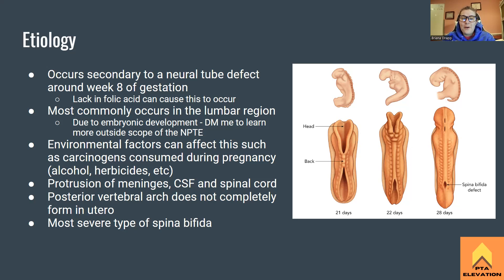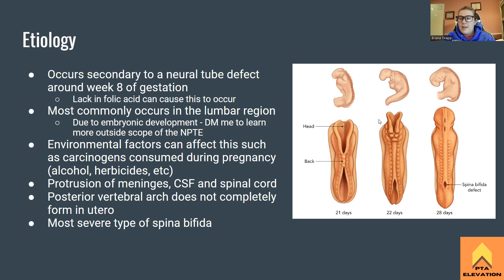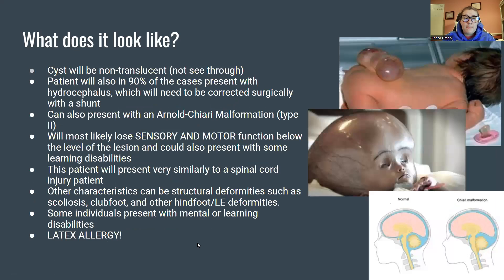So with myelomeningocele, there's protrusion of the meninges, CSF, and spinal cord. The posterior vertebral arch doesn't develop completely — it doesn't ossify — so the cyst is able to protrude out. In the picture, you can see vertebrae and then a gap where the posterior vertebral arch didn't develop. This all happens in utero. The boards want you to know this happens at eight weeks — that's the most severe type of spina bifida.